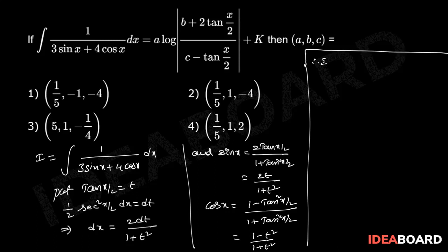Therefore i equals integration of 1 divided by 3 into 2t by 1 plus t square plus 4 into 1 minus t square by 1 plus t square, all multiplied by 2 dt by 1 plus t square.